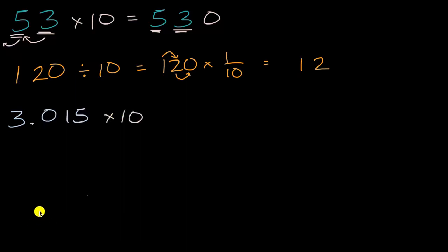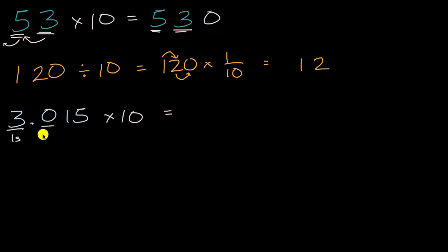Pause this video and see if you can figure that out. Well, the exact same thing is going to happen — all of our digits are going to shift one place to the left. Right now we have a three in the ones place, a zero in the tenths place, a one in the hundredths place, and a five in the thousandths place. But now they're all going to shift one place to the left.